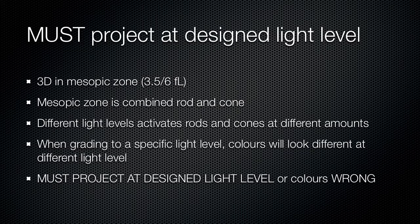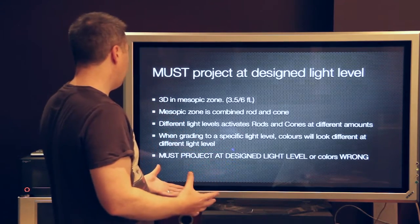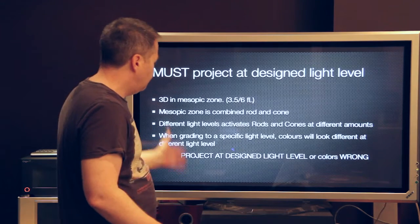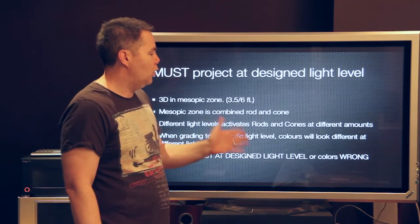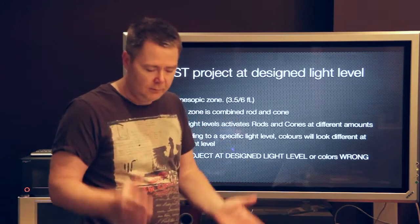So, we must project at the designed light levels. I hope you now understand why that's so important after that demonstration with the graphs and images. To recap: 3D is in the mesopic zone. The mesopic zone is a combination of rods and cones, and different light levels activate rods and cones at different amounts. That's why at different light levels we need different grades. If you don't project at the designed light level, all the colours will be wrong. This is critical.